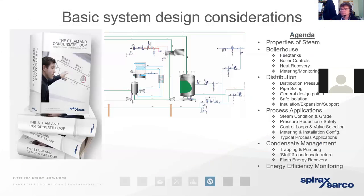Tonight's presentation follows on from the first in the series where we looked at steam fundamentals. Tonight we're going to look at the basic steam system design considerations — how we actually need to design the distribution network that conveys steam from the point of generation to the point of use. As a recap from last week, we'll go through a few quick slides to remind ourselves of the basic principles of steam and how we need to treat it completely differently to any other source of energy, such as low temperature hot water or thermal oils.